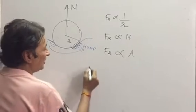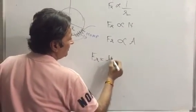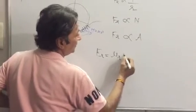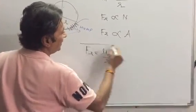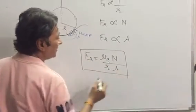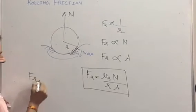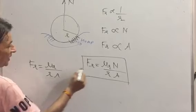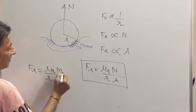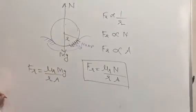So if we combine them, FR equals μR into normal reaction divided by radius into area. So my dear students, these are the laws of rolling friction: FR = μR × N / (R × A), and instead we can write MG where M is the mass of the wheel.